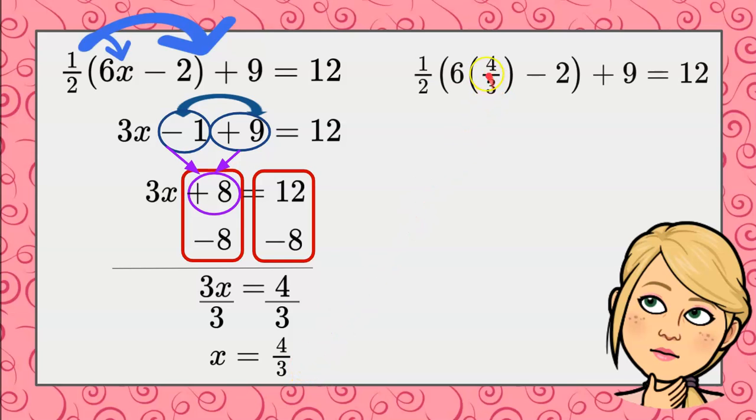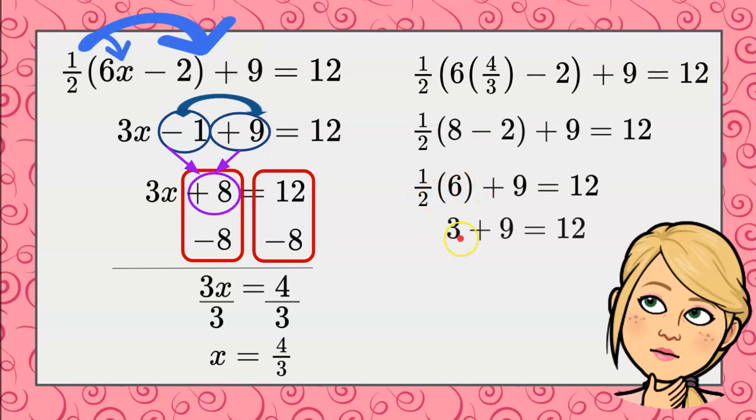Let's check our work. We're going to replace the x in the original equation with 4 thirds, our solution. 6 times 4 thirds, 6 divided by 3 is 2, and 2 times 4 is 8. 8 subtract 2 is 6, half of 6 is 3, and 3 plus 9 is 12.